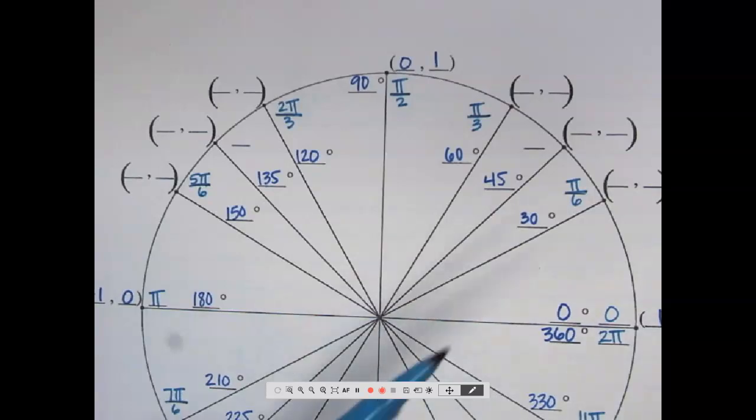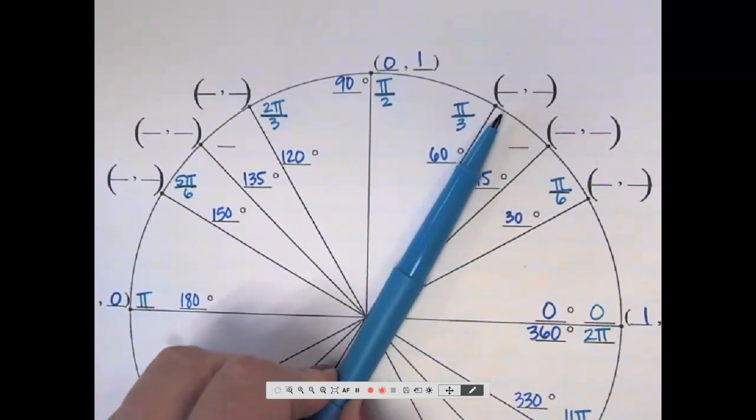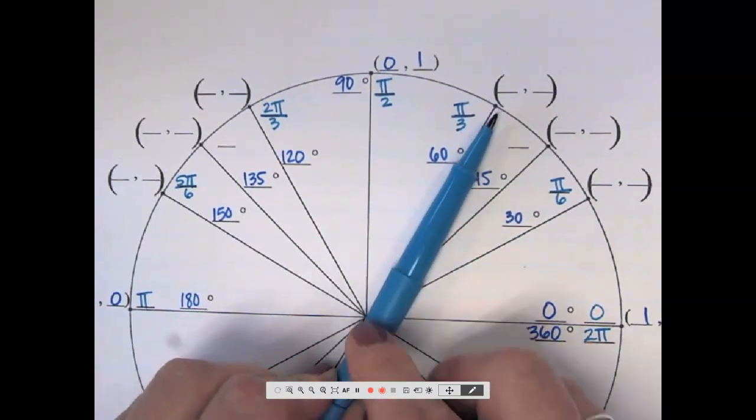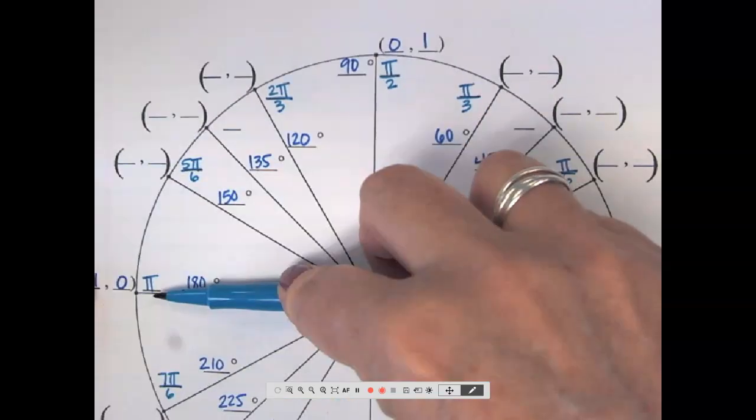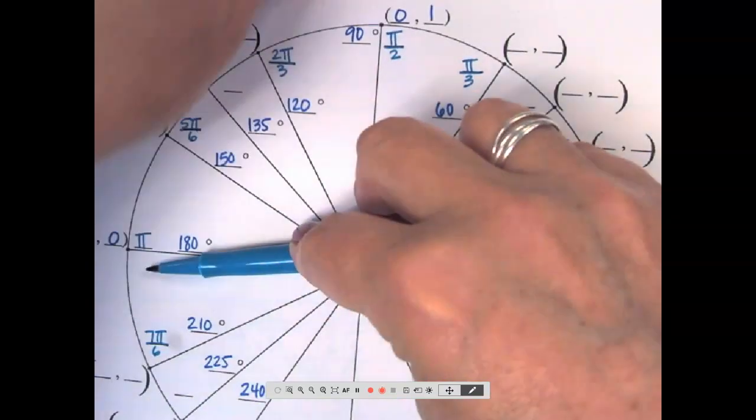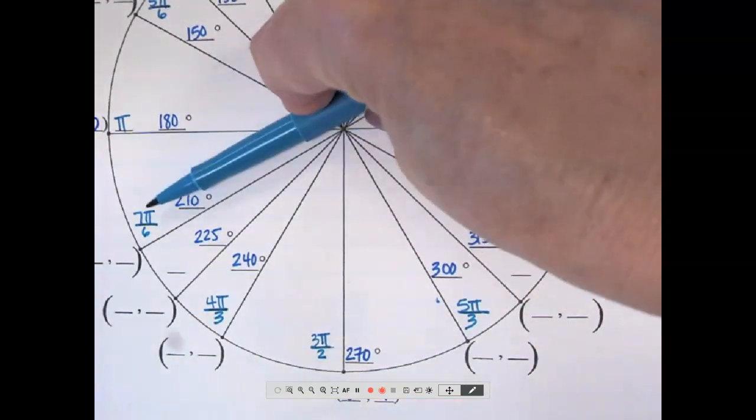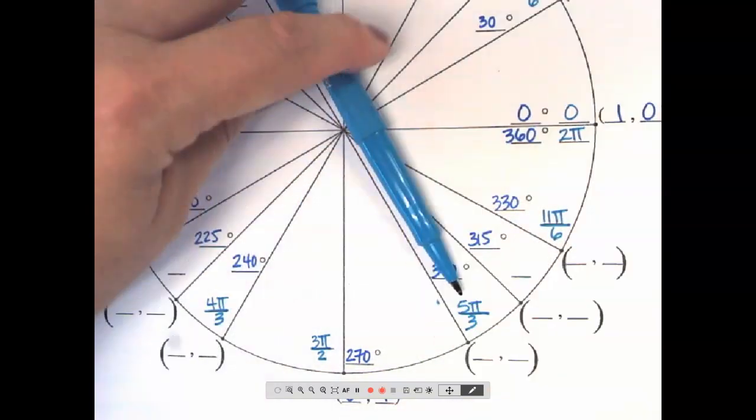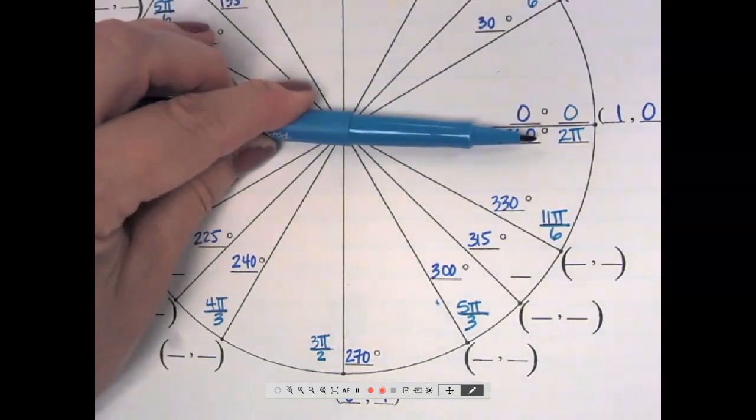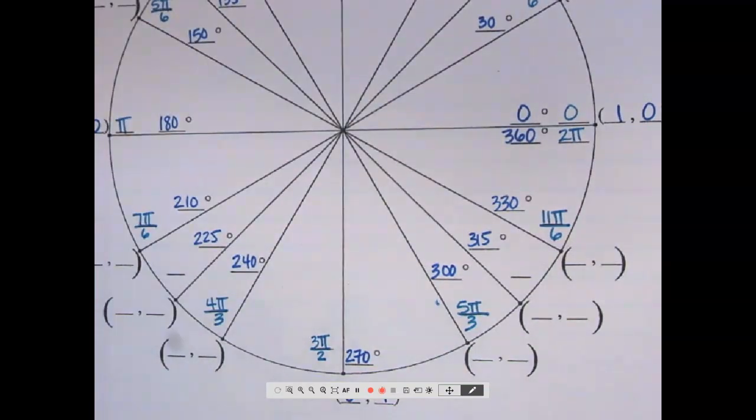We could also look at increments of 60. So 60 is 1 third. Here's 1 third. 2 thirds. 3 thirds. 4 thirds. 5 thirds. 6 thirds. And so it's really just a bunch of patterns around the circle.